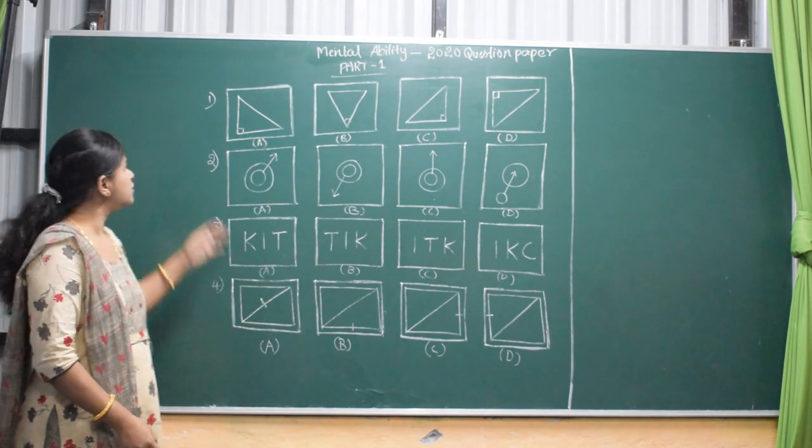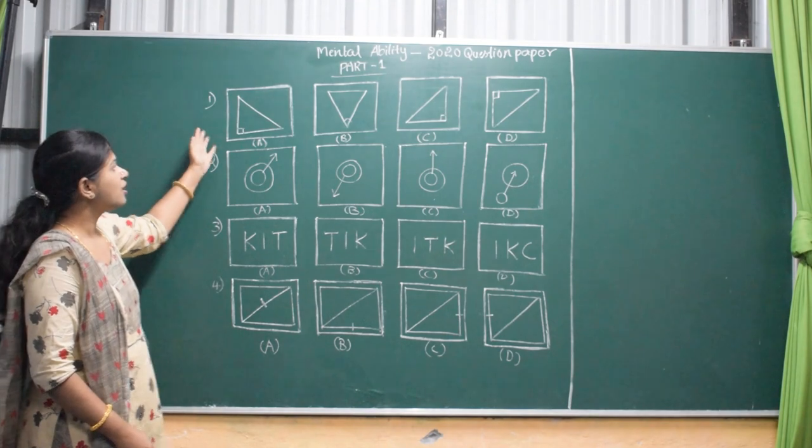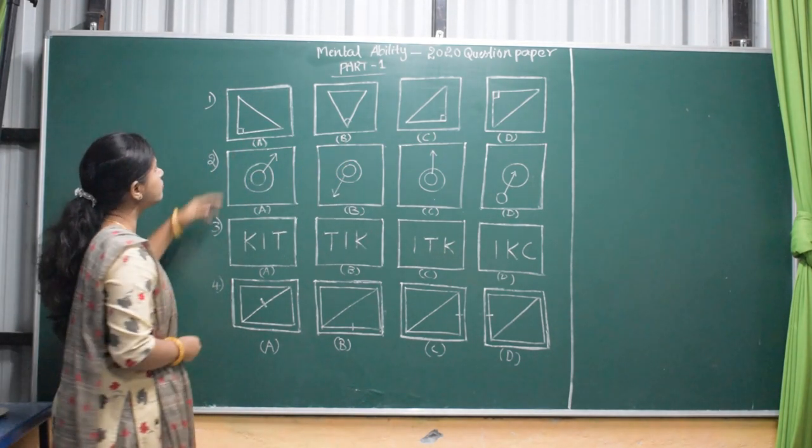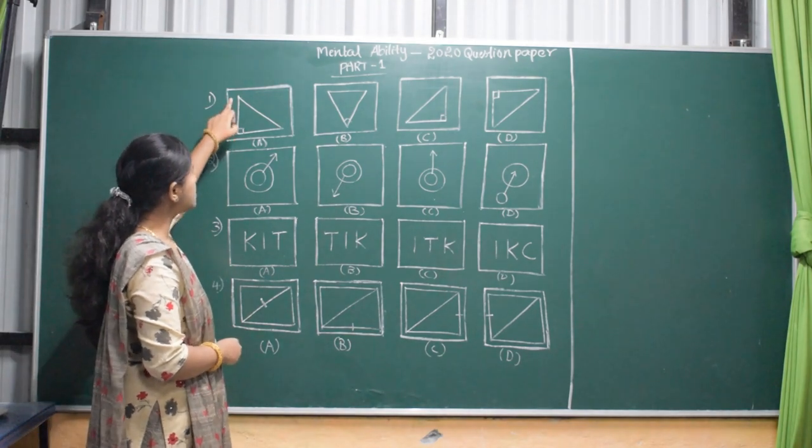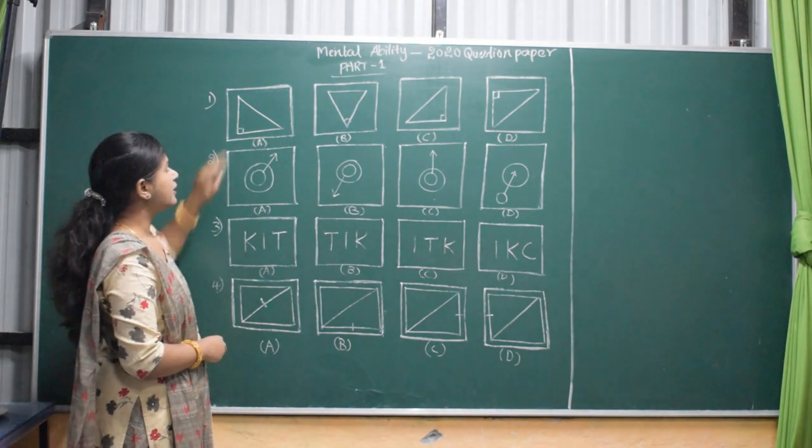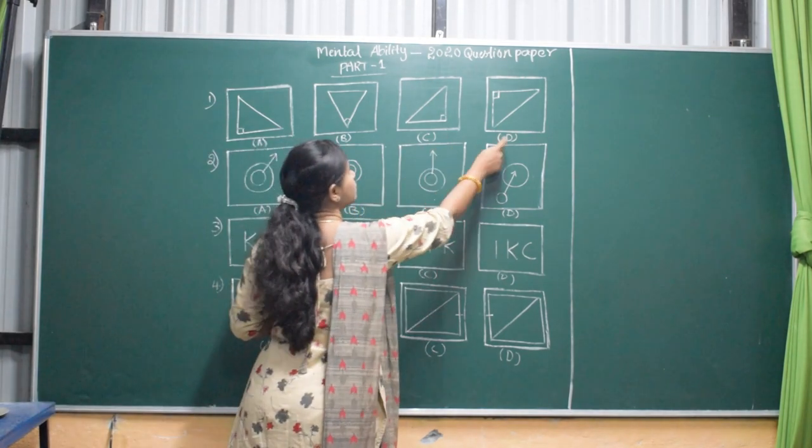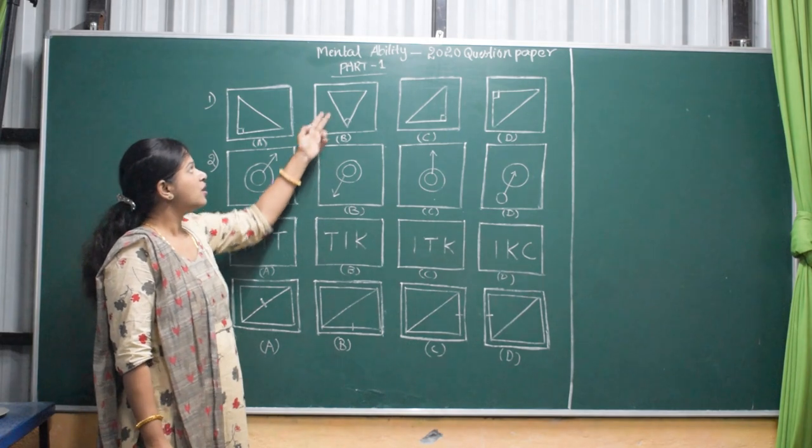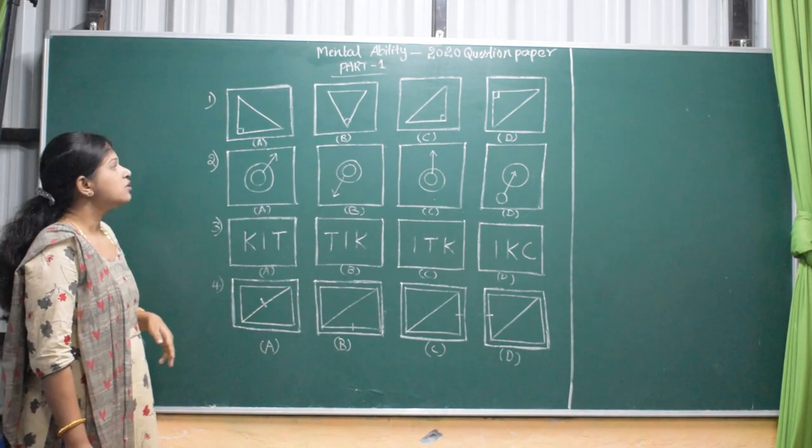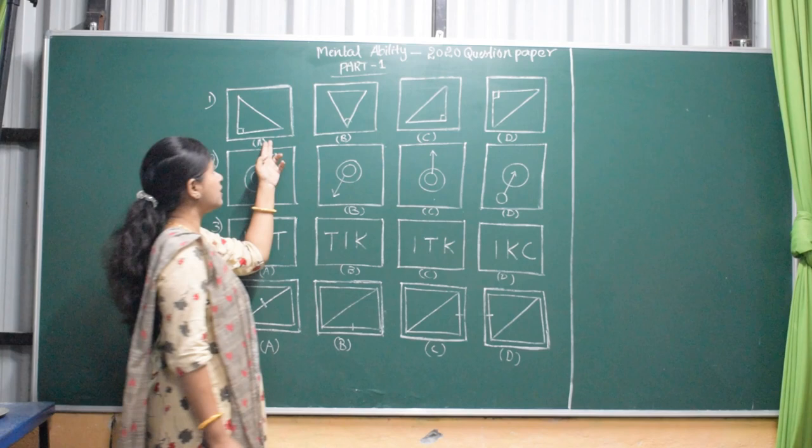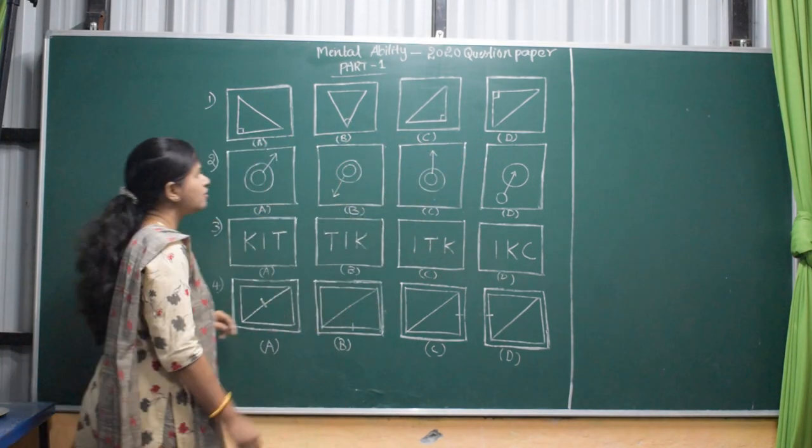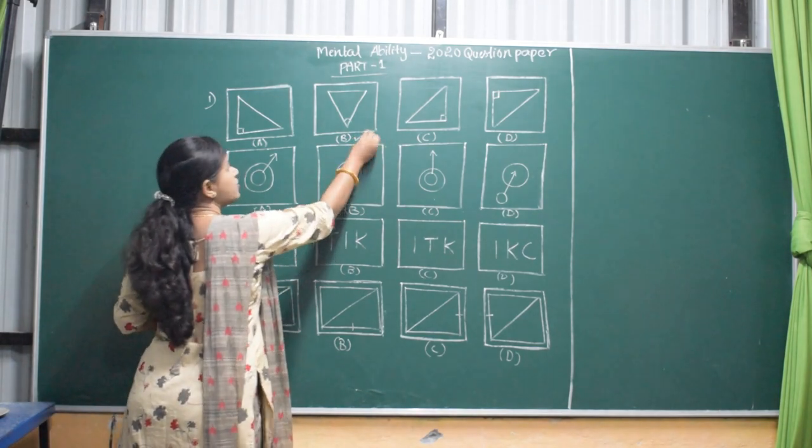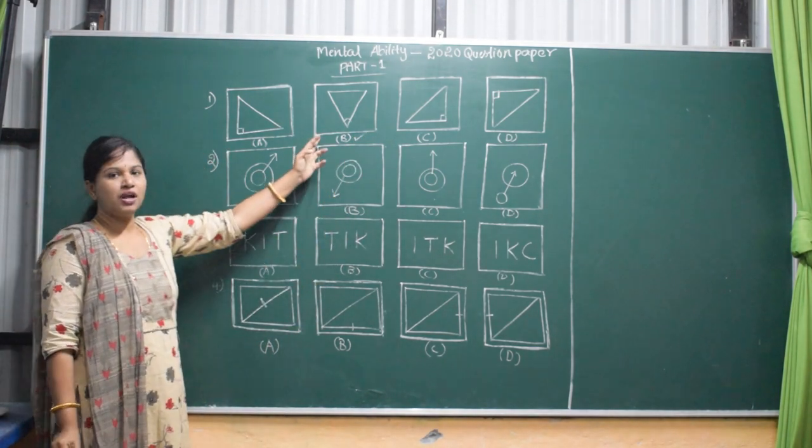Let's move on to the first question. In the first question, there are 4 triangles here. Observe here. In the first figure, there is a right triangle. And in the third figure and fourth figure also right triangle. But in the second figure, this is an equilateral triangle. Figure A, C, and D are similar, but figure B is different. So the answer is figure B. B is the odd one out here.